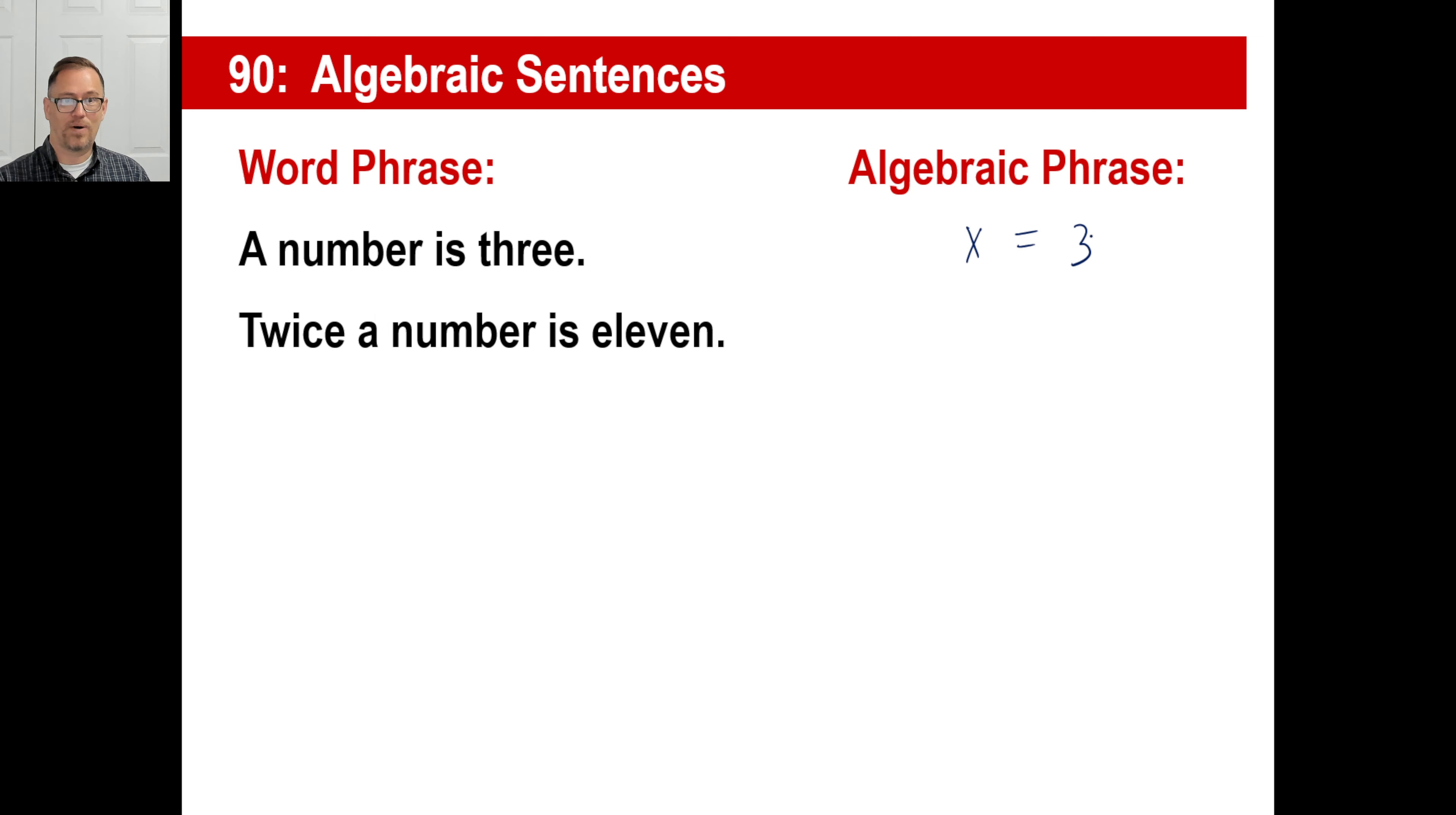Boom. There you go. Twice a number is 11. Notice we have ises now. We have the word is in all these. Twice a number, 2x, is equals 11.